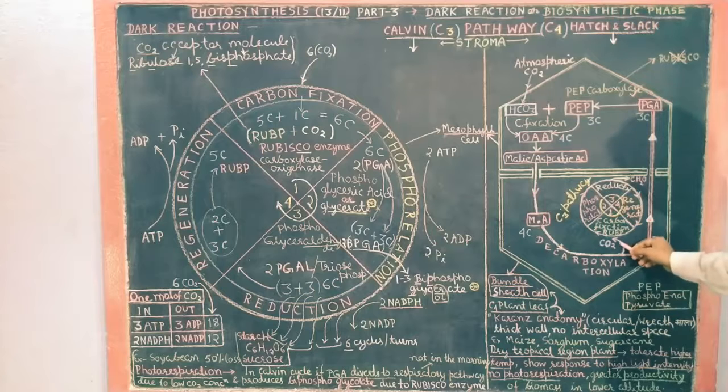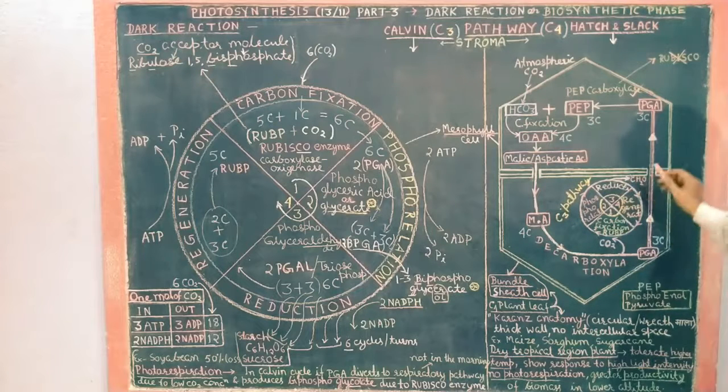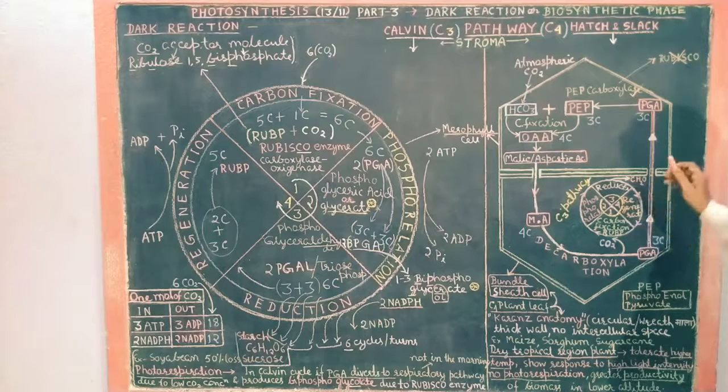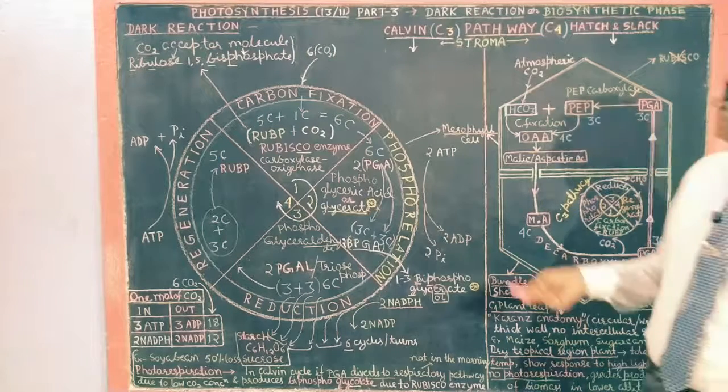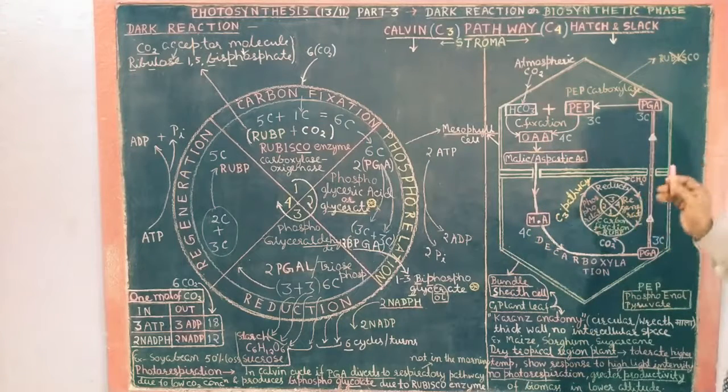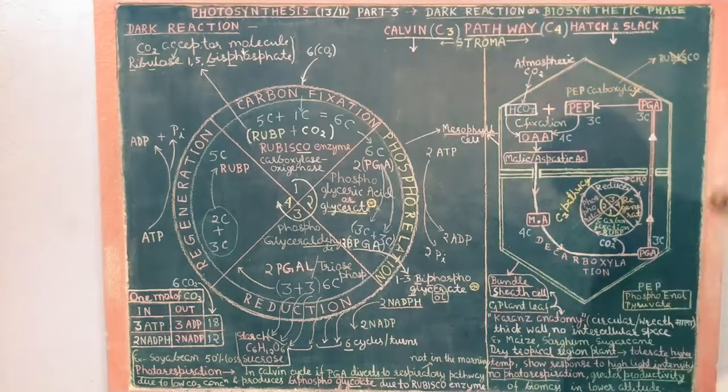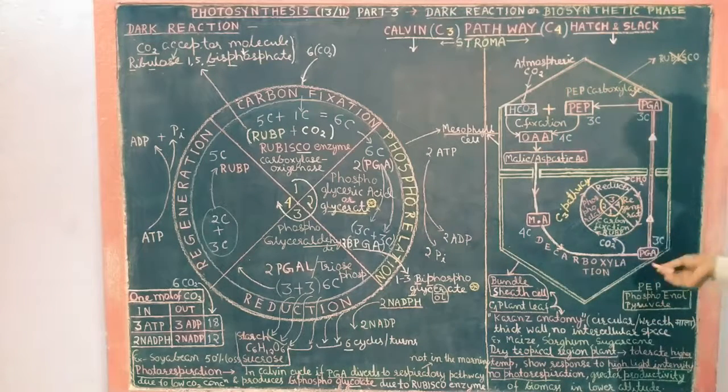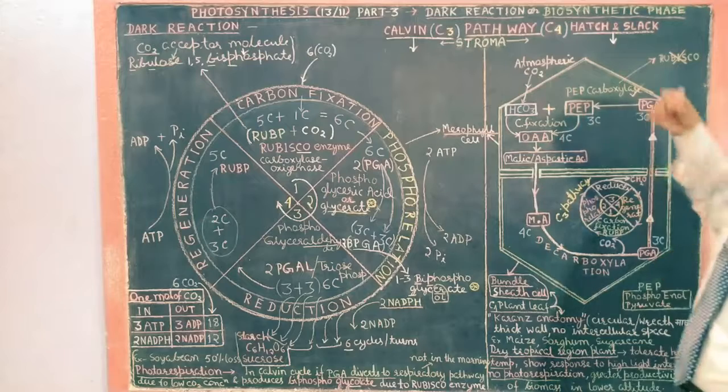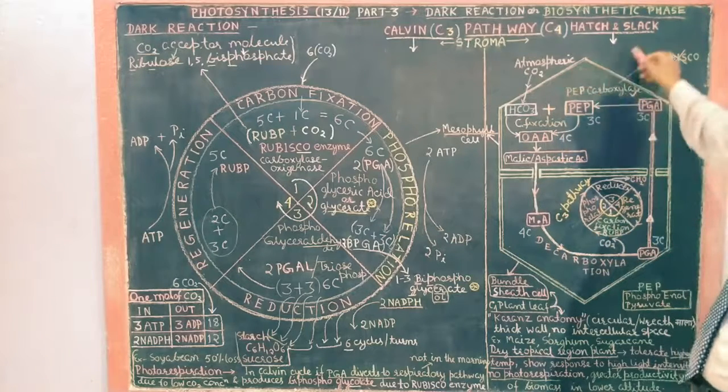Decarboxylation means removal of carbon. Here a CO2 molecule is removed and then PGA is formed and this cycle continues. And here when it becomes CO2, it is necessary that Calvin cycle continues in the plant. So Calvin cycle is a must for all type of plant whether it is C3 plant or C4 plant.